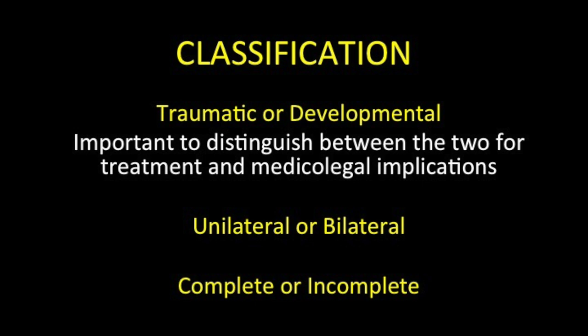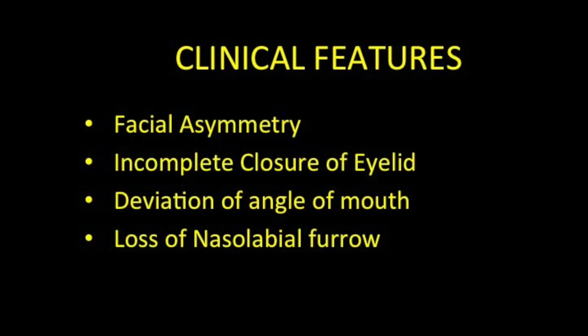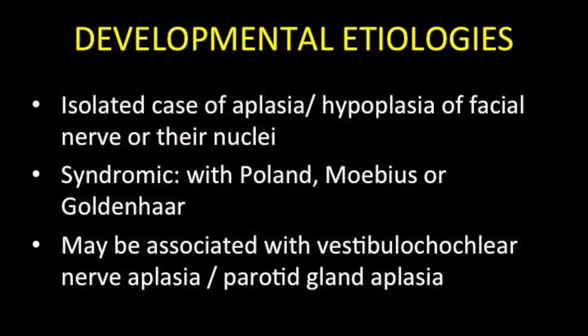Congenital facial nerve aplasia is a rare condition where patients present with signs of facial nerve paralysis. It can be unilateral or bilateral, characterized by facial asymmetry, incomplete closure of the eyelid, deviation of the angle of mouth, and loss of nasolabial furrow. It can be caused due to intrapartum trauma or can be developmental. In our case, there was no history of intrapartum trauma.